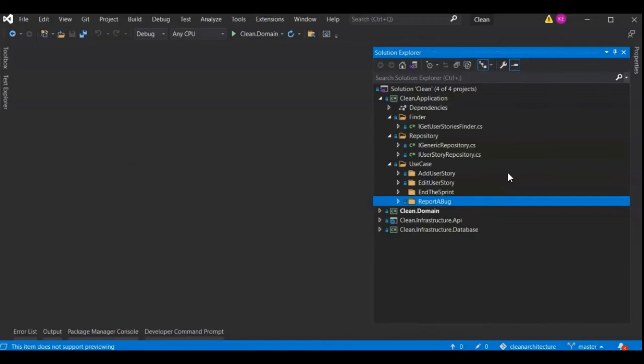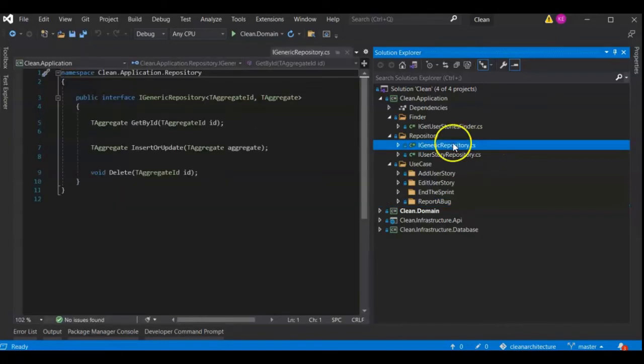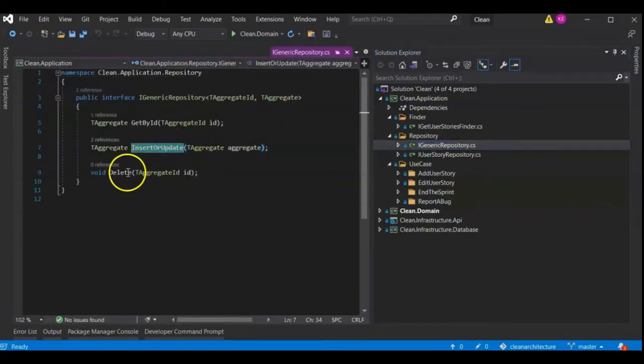So, the repositories are defined here because the use cases need to interact with them and I can't put them in the infrastructure layer because then the use cases would need to call an outer layer, which would violate the rule that dependencies point inward. I recommend that repositories only have insert, update and get by ID or maybe get all objects.